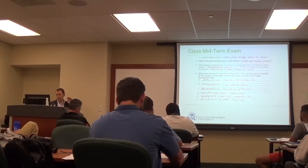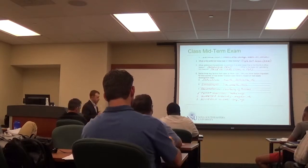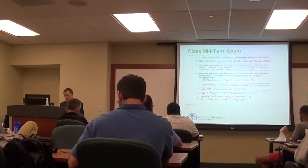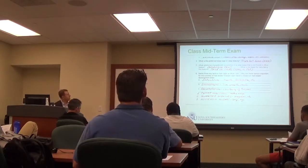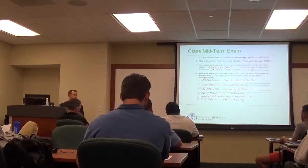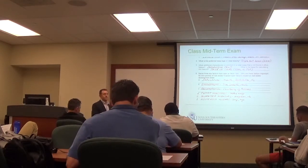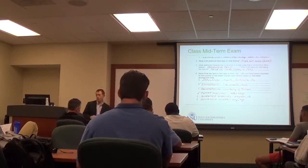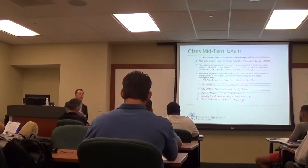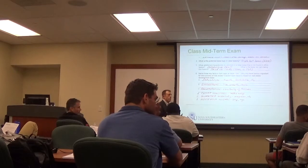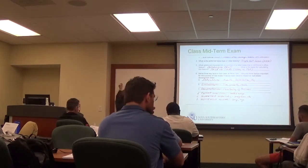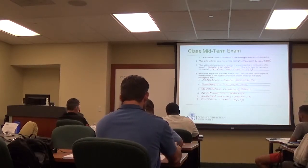Moving to problem seven — the professor asks a student to explain their answer. The student walks through it: $12,500 a month times 12 equals $150,000 annual potential gross income. Operating expenses at 25% equal $37,500. Subtracting gives a NOI of $112,500.